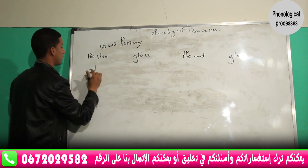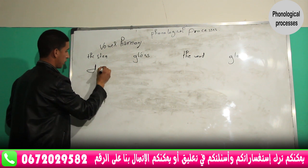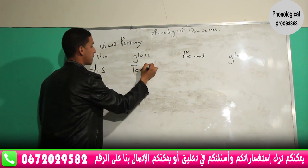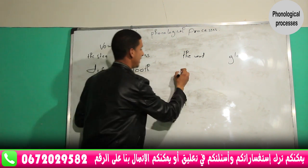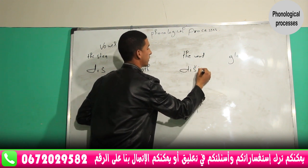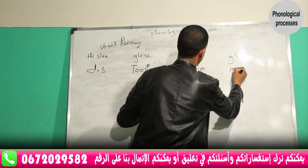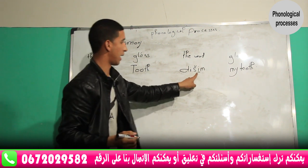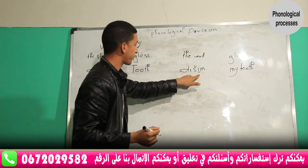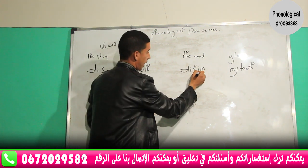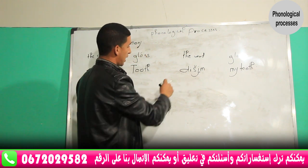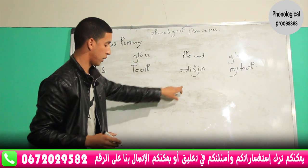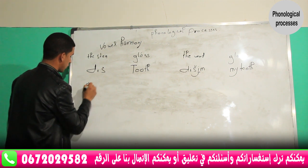The stem is 'dish', which means 'tooth' in English. If you want to say 'my tooth', you say 'dishim'. The suffix vowel here is a high, front, and unround vowel. The stem vowel is also 'i', so they agree. Since the suffix vowel is high and agrees in backness and rounding with the stem vowel, we are talking about vowel harmony.